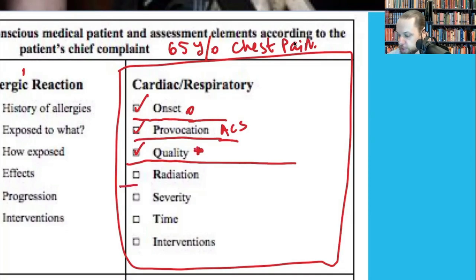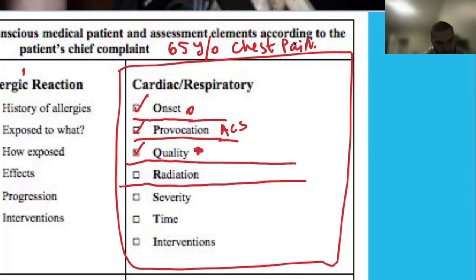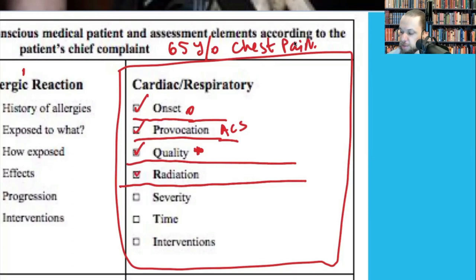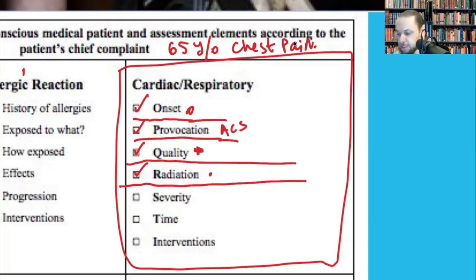Radiation: does the pain move to any other location? Classic radiation is to the left arm, left shoulder, and left jaw, but it can also be to the right side, neck, or back. Do not dismiss atypical presentations — especially in females and patients with diabetes who may have non-classical presentations.